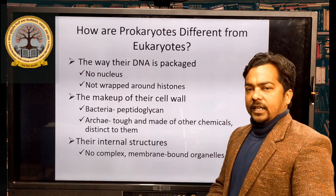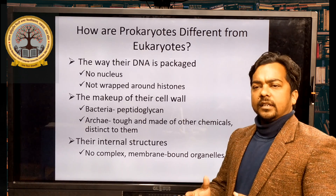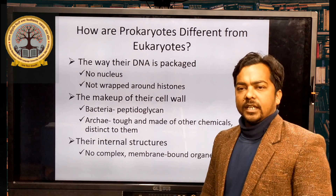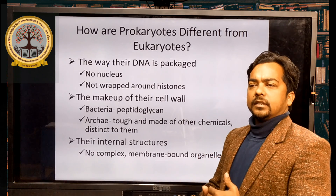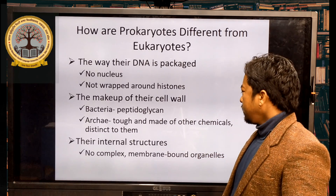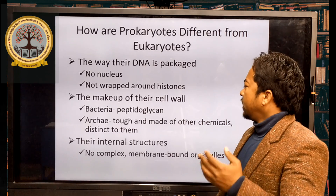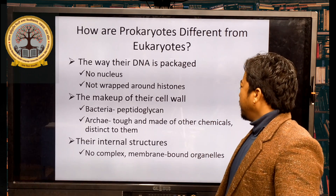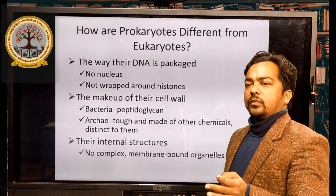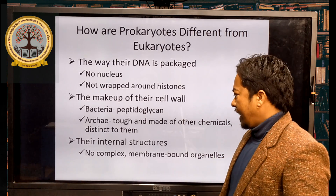Another difference is the makeup of their cell wall. In prokaryotic cells, for example, bacteria have a cell wall made up of peptidoglycan. Archaea and other prokaryotic cells are also made up of other chemicals, but in bacteria, the cell wall is made up of peptidoglycan.